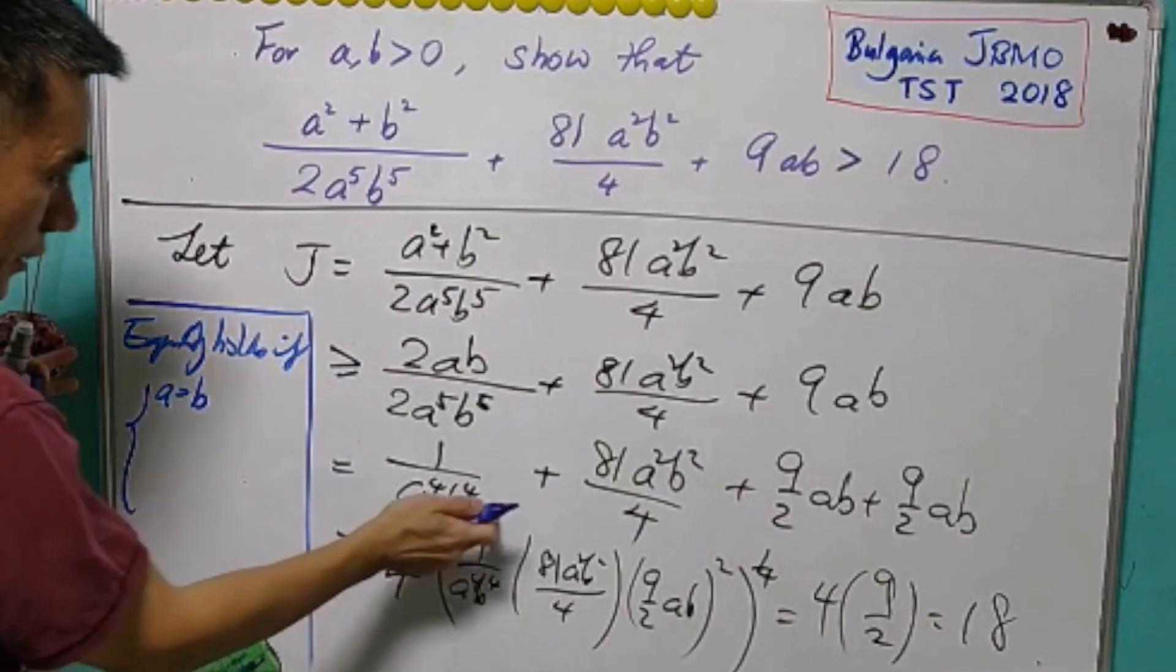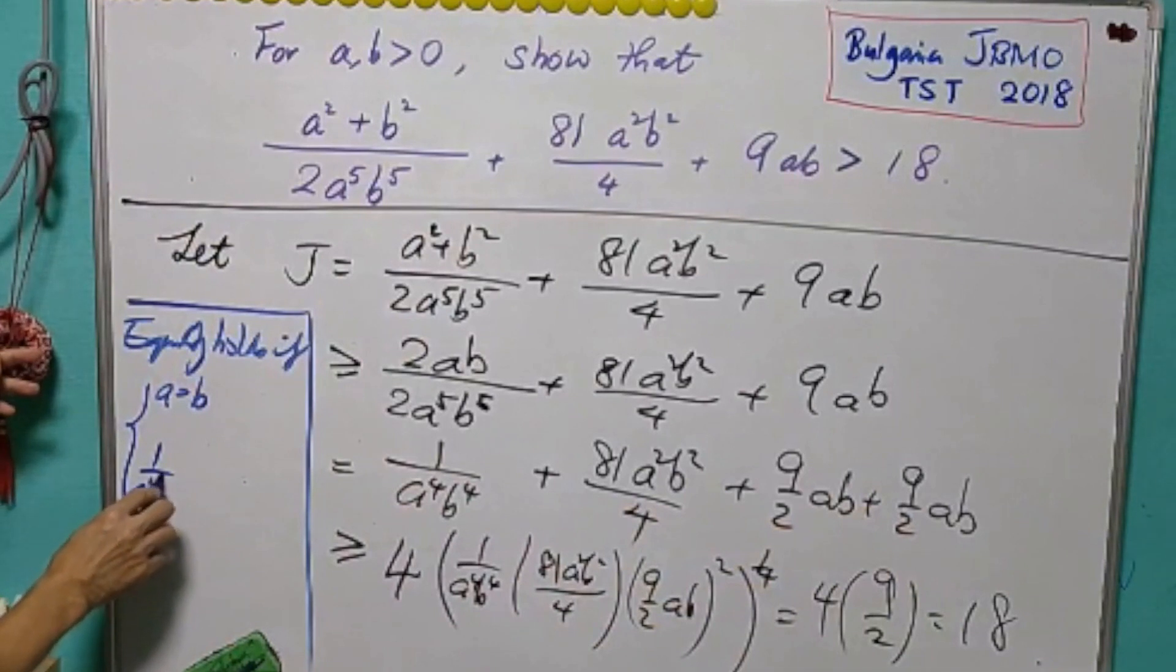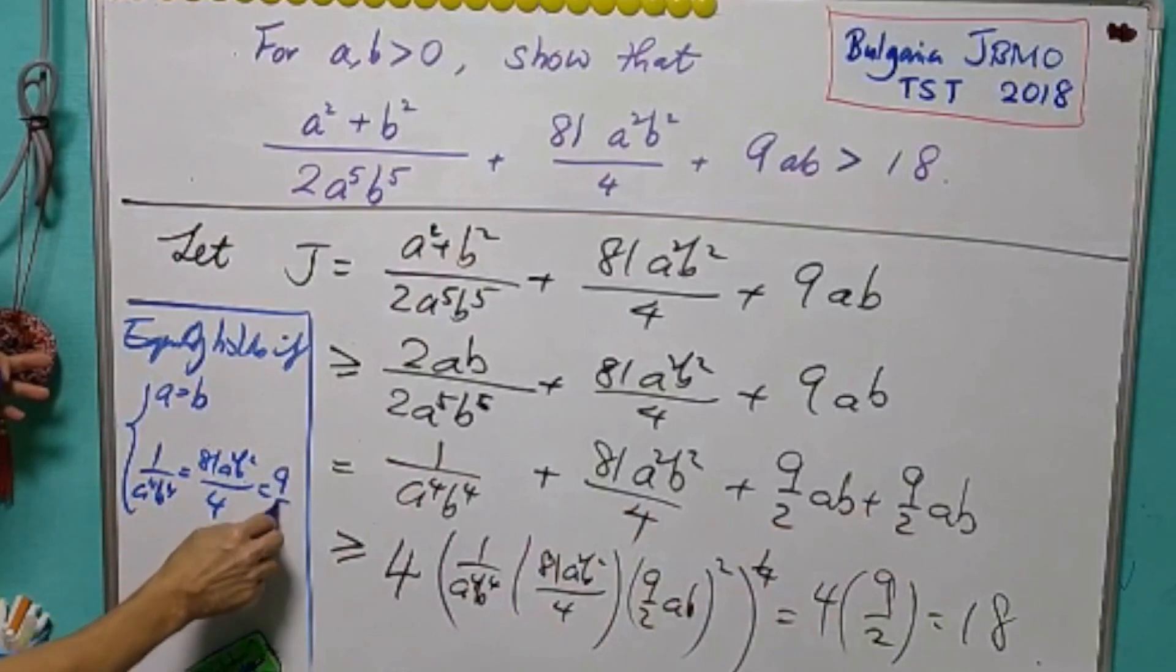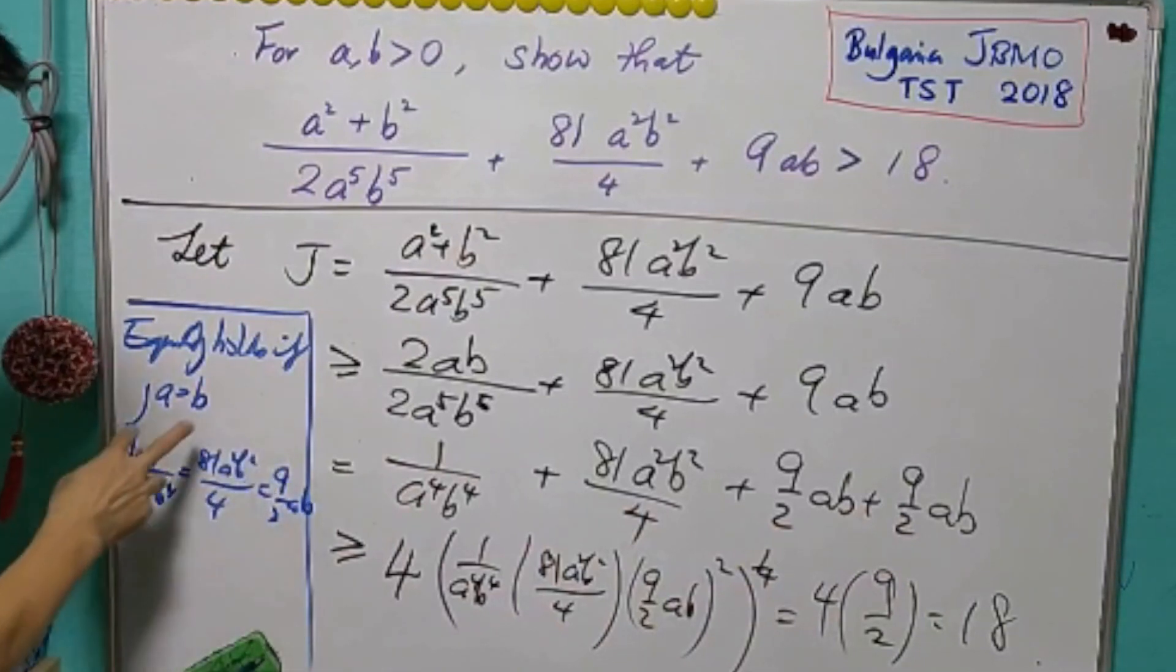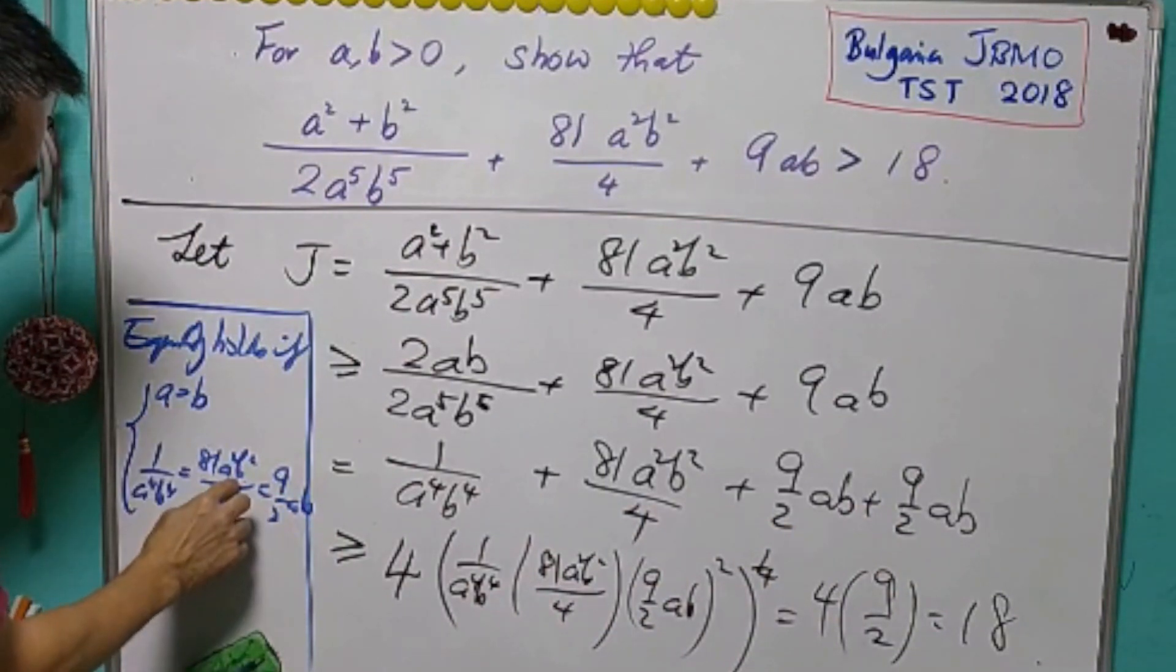a equals b. And from here, each of the terms here has to be the same. That is 1 over a⁴b⁴ equals to 81a²b² over 4 equals to 9 over 2ab. Now, if a equals b, this will be a², and this will be a⁴.